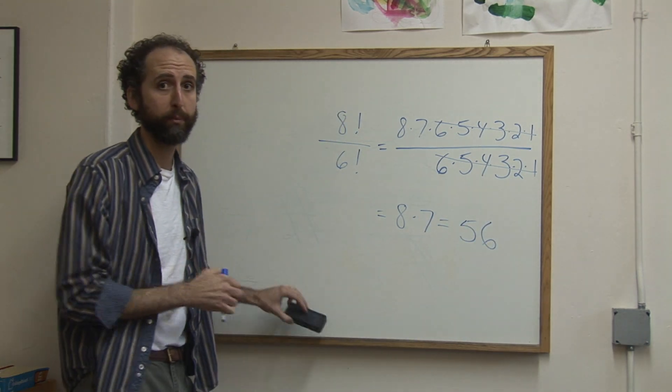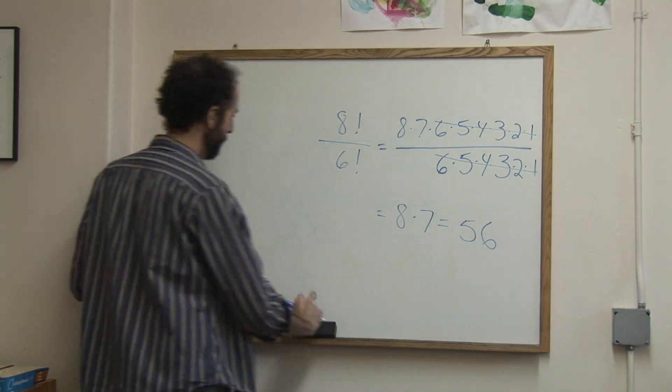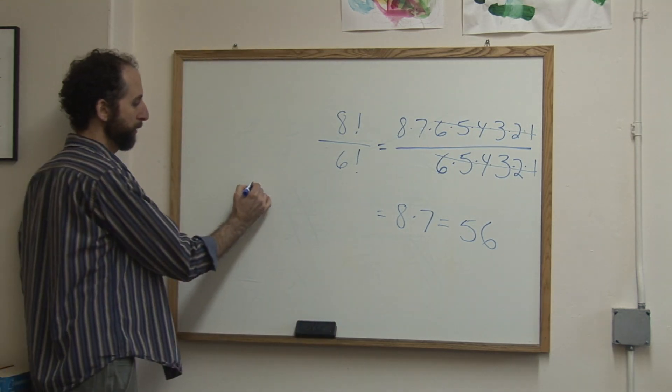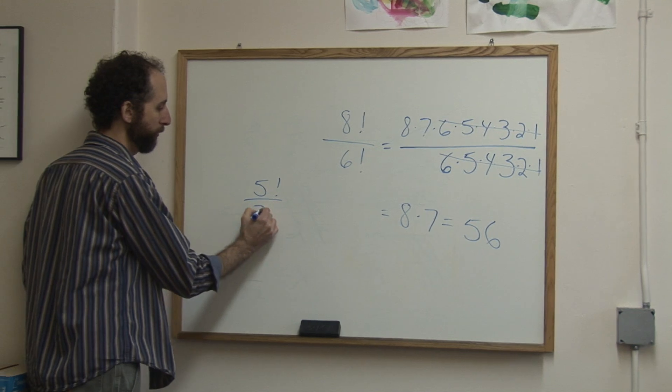Let's take a look at the second example. I'll do it over here. So let's take a smaller one, 5 factorial over 3 factorial.